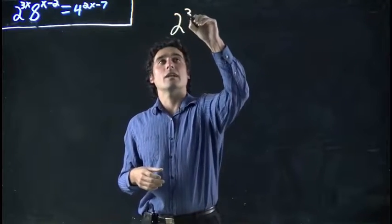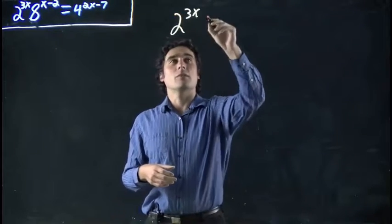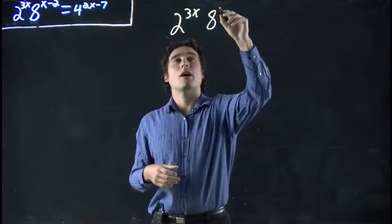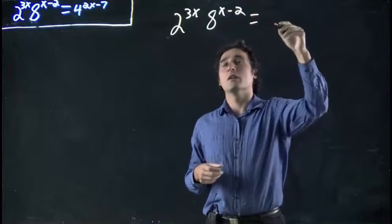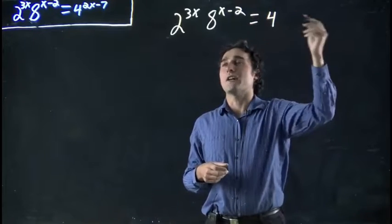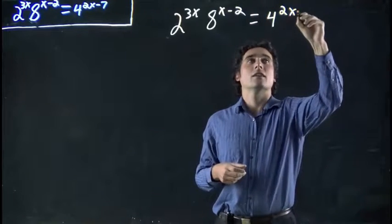We have 2 to the power of 3x, and that's multiplied by 8, which is raised to the power of x minus 2. And that is all equal to 4, which is itself raised to the power of 2x minus 7.